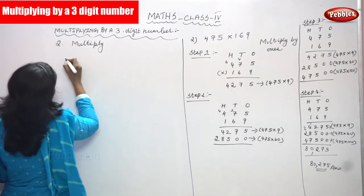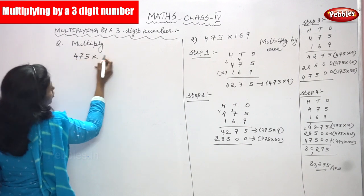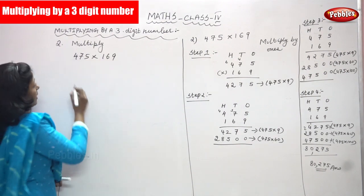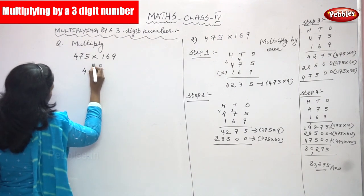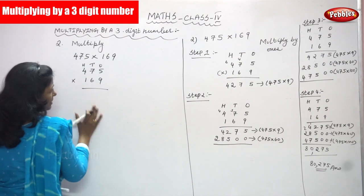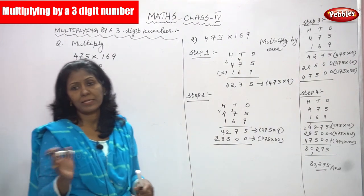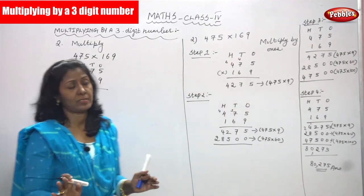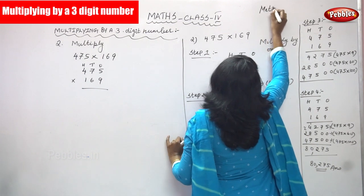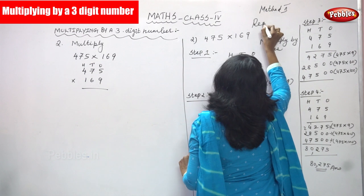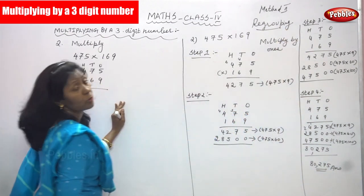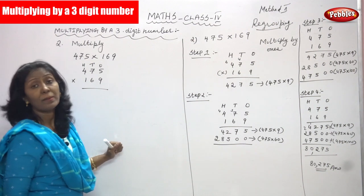Now I am going to tell you this sum: 475 into 169. This is a 3-digit number and this is also a 3-digit number. This is a normal multiplication — simple and normal multiplication. This means there is no regrouping; it is a very normal multiplication. This is Method 1: without regrouping method.